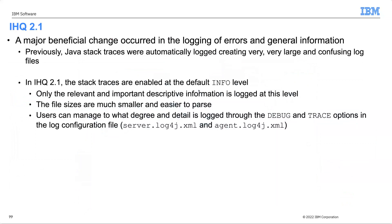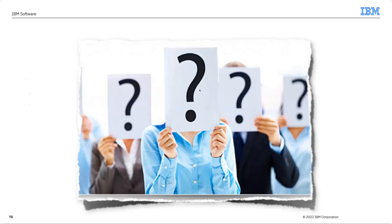Another big change in IHQ 2.1 is in the logging of errors and general information. In earlier versions, error log files were huge and very difficult to parse. In IHQ 2.1, stack traces have been enabled at a default of 'info' level, so only relevant information is logged — making the log file significantly smaller. You can still manage your stack trace level through the debug and trace options in the properties files.